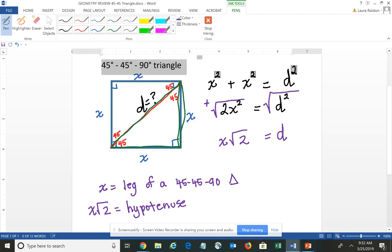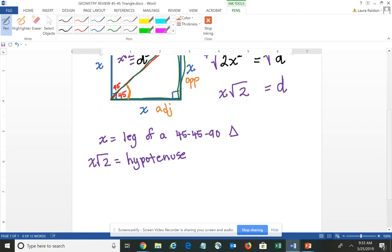Then if we think about our trig relationships, knowing that this hypotenuse is X times the square root of 2, and you think about your trigonometric relationships, it doesn't really matter which one of the angles we decide to focus on because they're both 45, but let's say we use this angle here so that you have opposite and adjacent and of course the hypotenuse. So then if I think about what would be the sine of 45 degrees, which is the opposite over the hypotenuse, we would have X over X times the square root of 2.